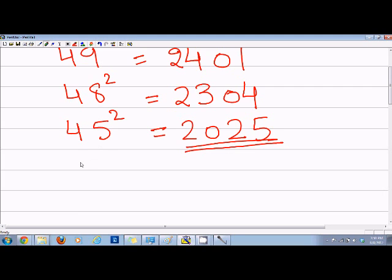And we can also go for numbers which are bigger than 50. For example, if I have 52 square, then what I will do is I add 2 to 25, which is 27, and then I will write square of 2, which is equal to 4. So its answer is 2704.